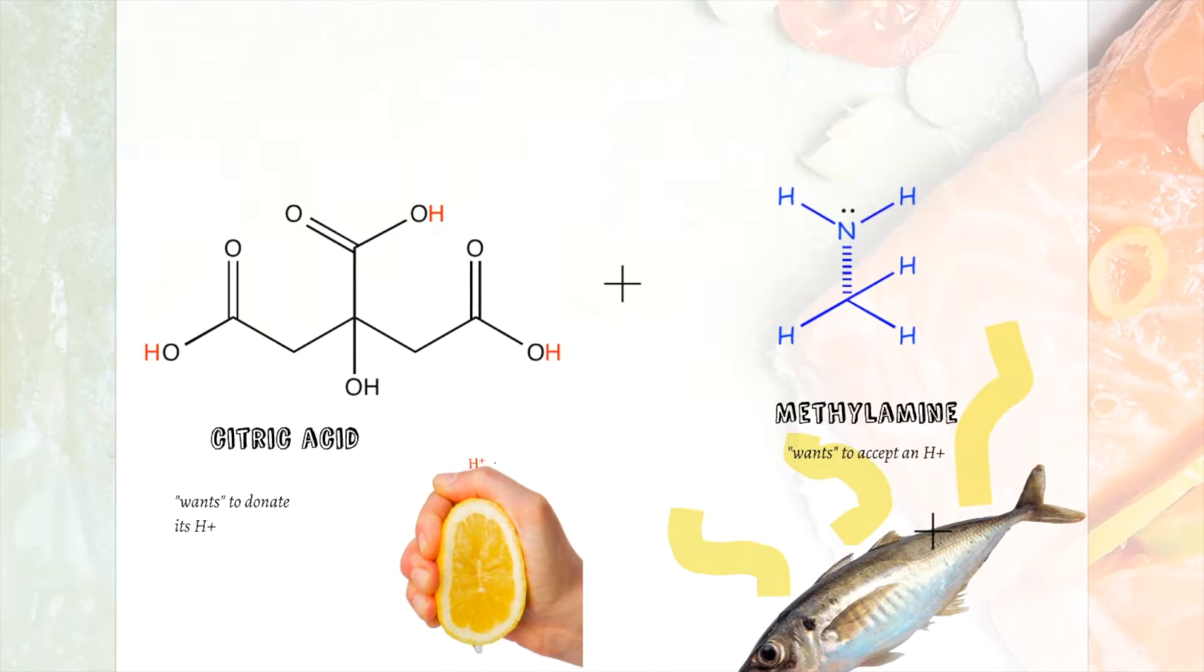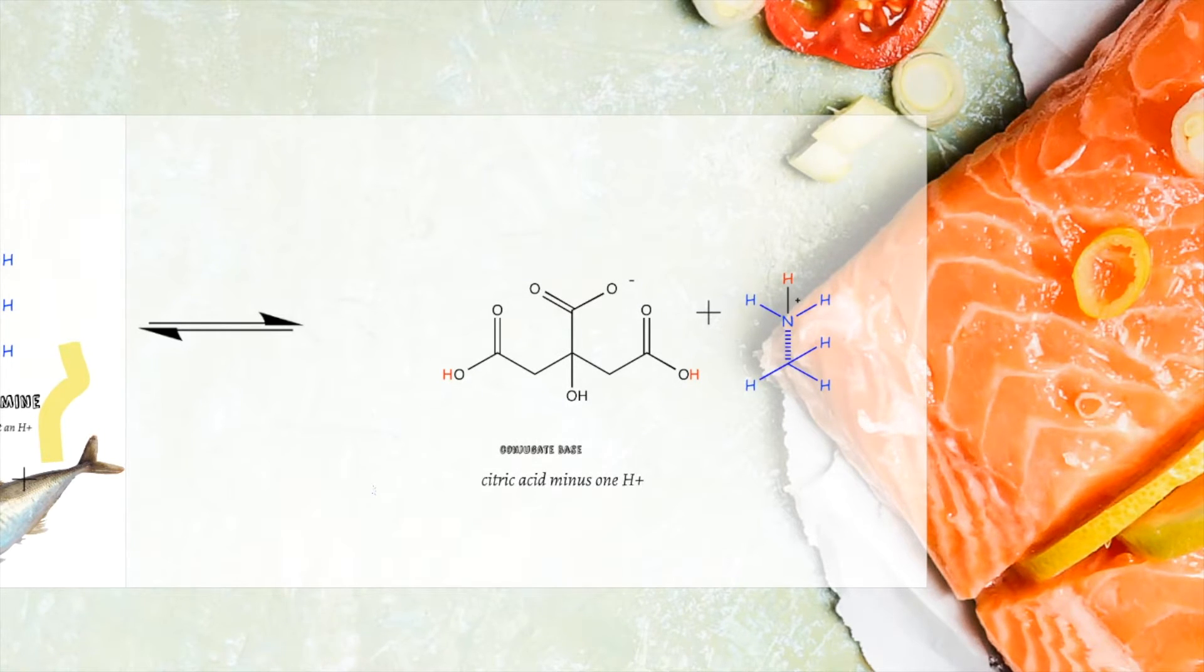Although both citric acid and methylamine are characterized as weak, citric acid is a stronger acid than methylamine is a base. Because of this, at equilibrium, nearly all the methylamine will be protonated and exist in its conjugate acid form.